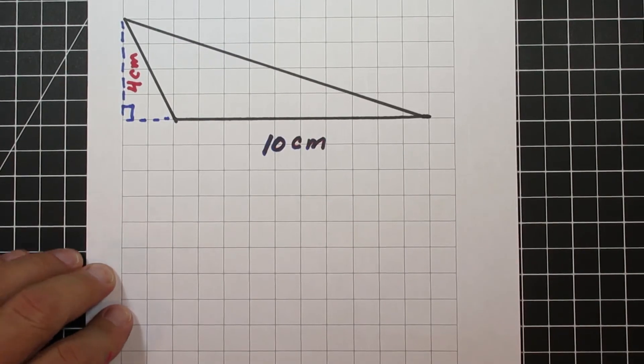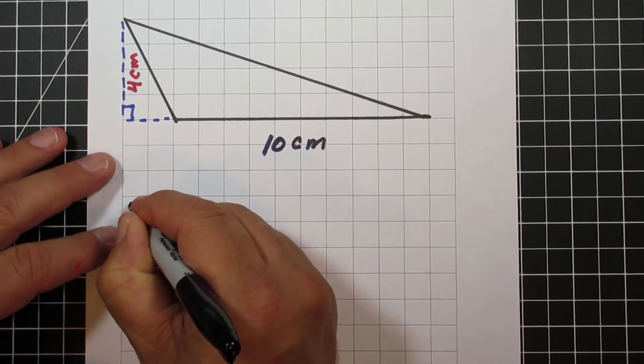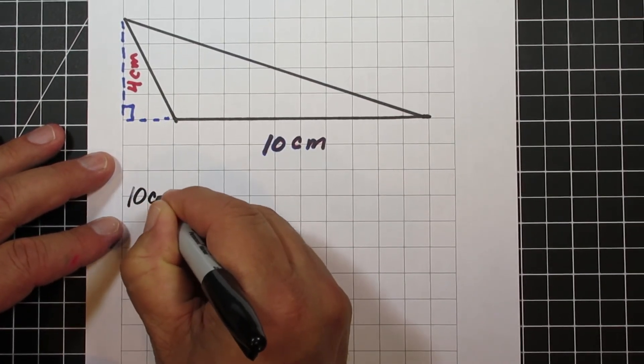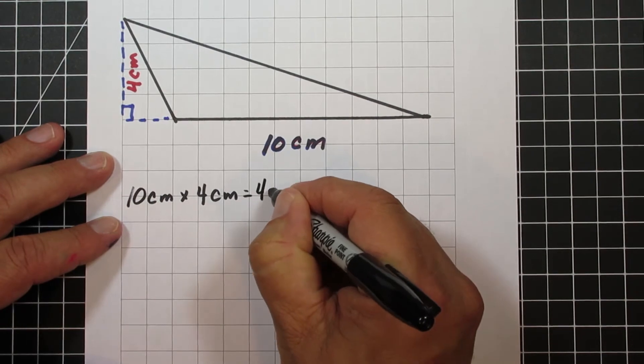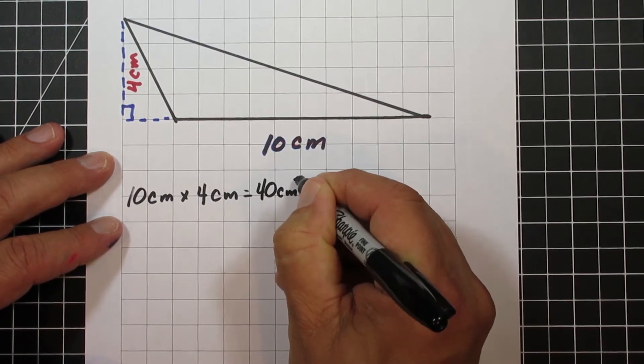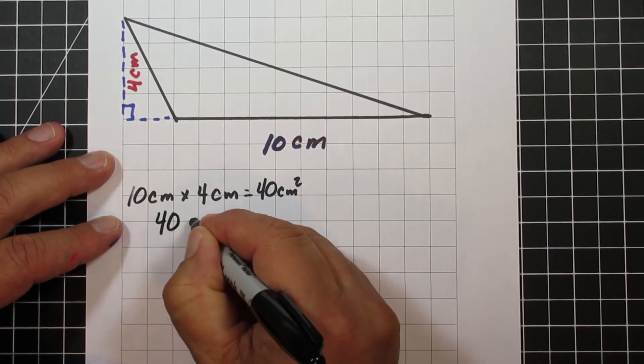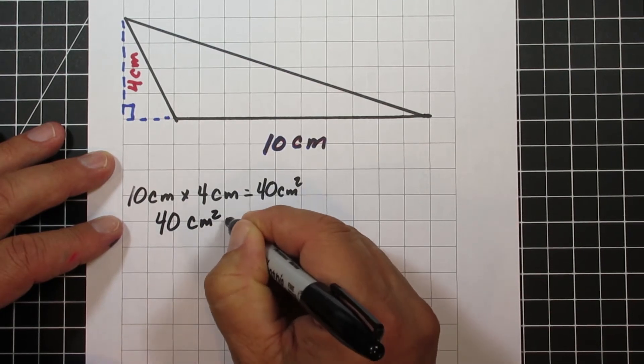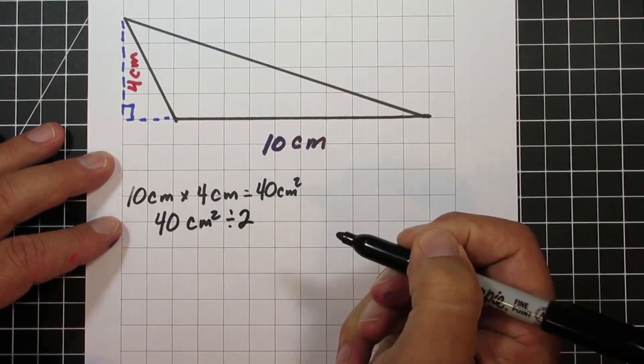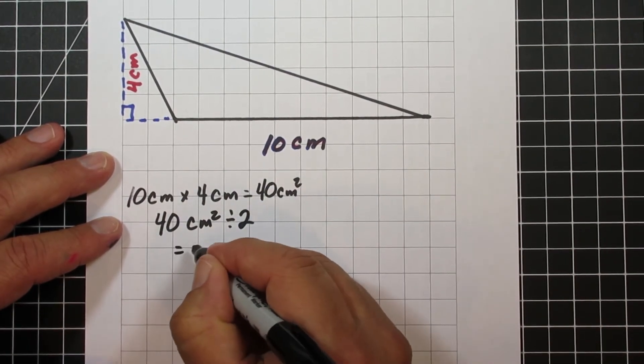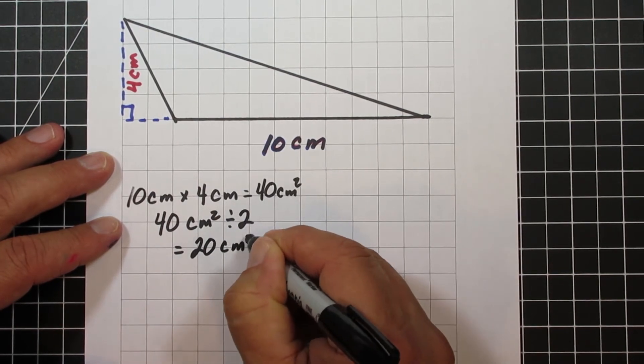Our final example is this one, where the height is kind of outside of the base of the triangle, but our base is 10 centimeters, our height is 4 centimeters, so we have an area of 40 centimeters squared. Now, we're going to take that, divide it by 2, and that will give us 20 centimeters squared for this triangle.